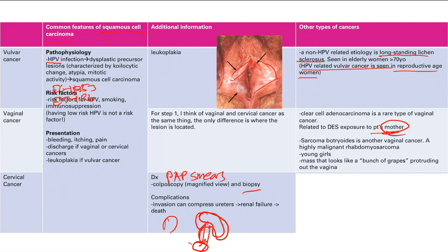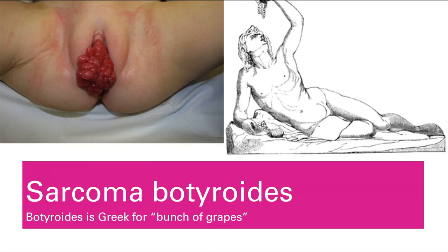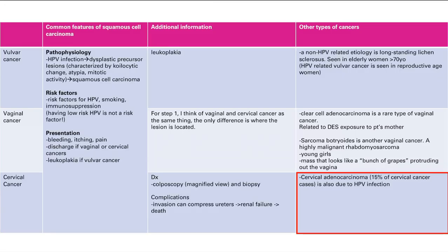Sarcoma botryoides is another vaginal cancer — a rhabdomyosarcoma, meaning a malignant cancer of skeletal muscle, seen in young girls. The name comes from the Greek word for 'bunch of grapes,' which is exactly how it presents: a bunch of grape-like masses protruding out of the vagina.